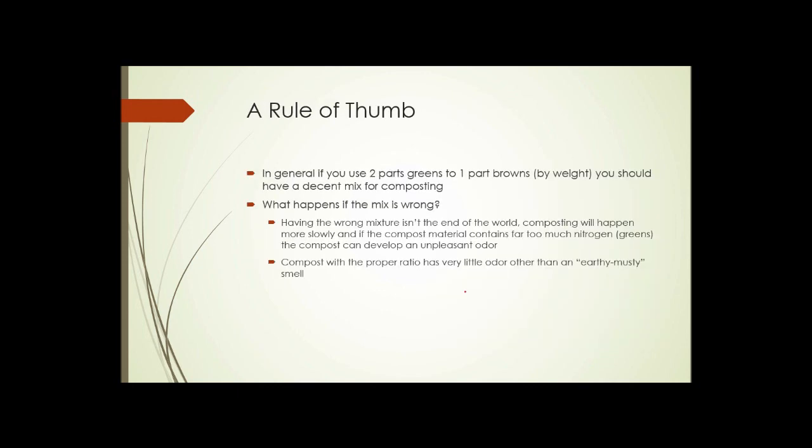So as a rule of thumb, if you use two to three parts by volume of greens to one part brown, this is by weight, but by volume seems to work about the same, you should have a decent mix for composting. But what happens if it's wrong? What if you don't have access to the browns that you need or for some reason your mix is wrong? Well, it's not the end of the world. Composting is still going to happen, it's just going to happen much more slowly.